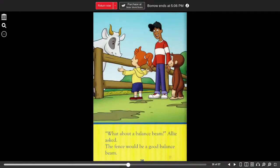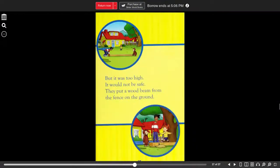What about a balance beam? Allie asked. The fence would be a good balance beam. But it was too high. It would not be safe. So, they put a wood beam from the fence on the ground.